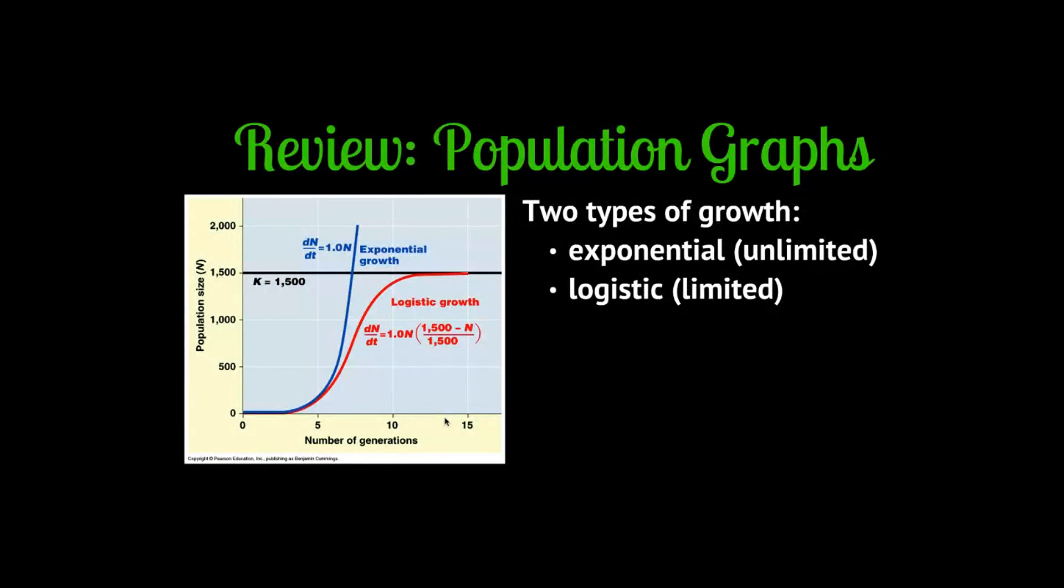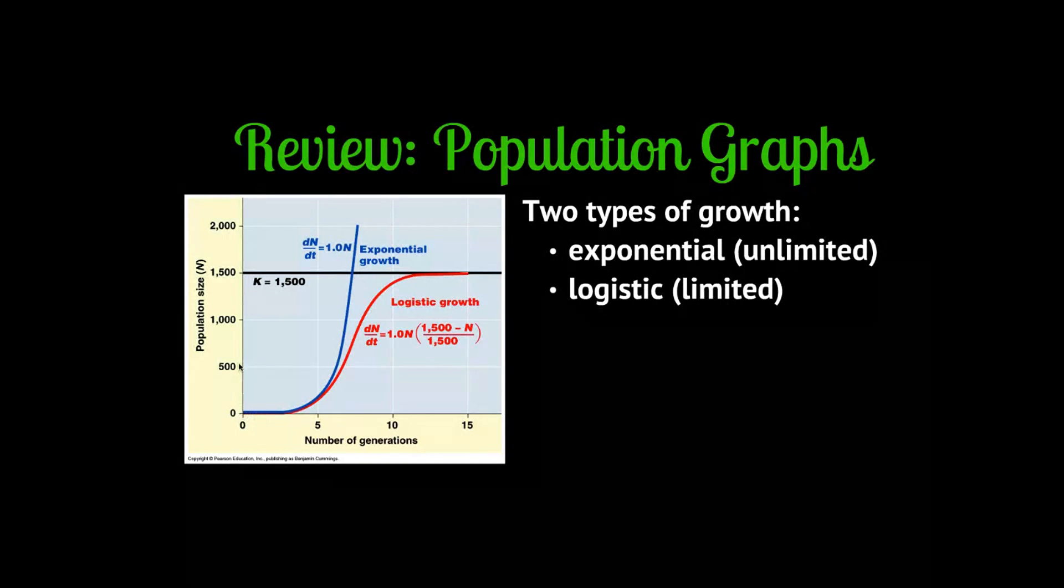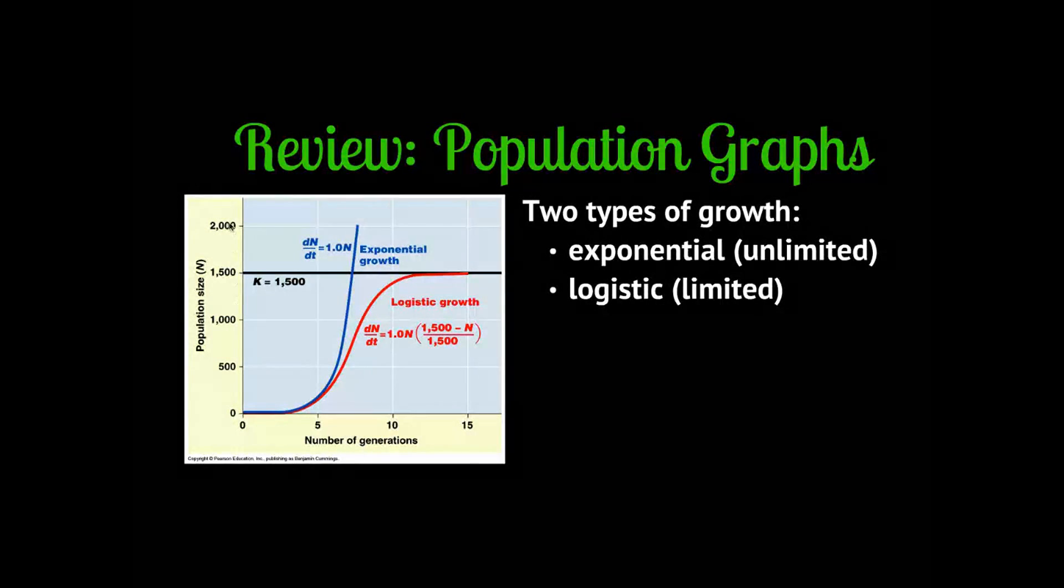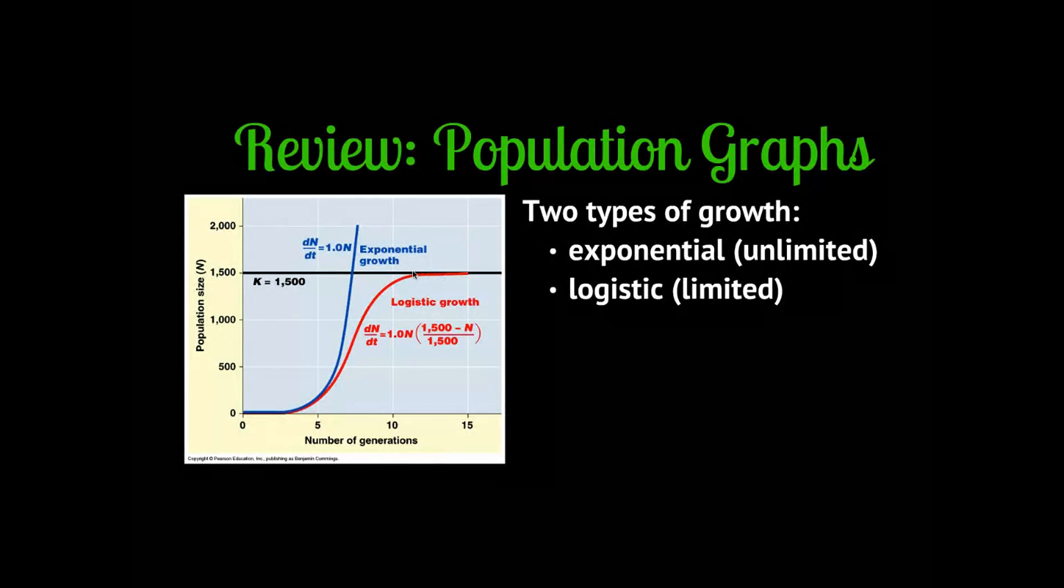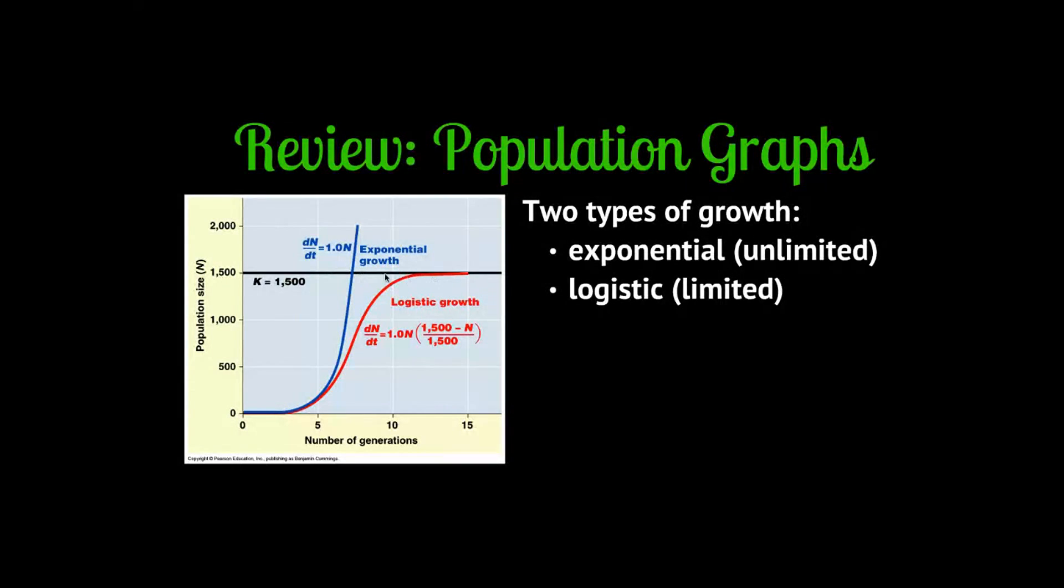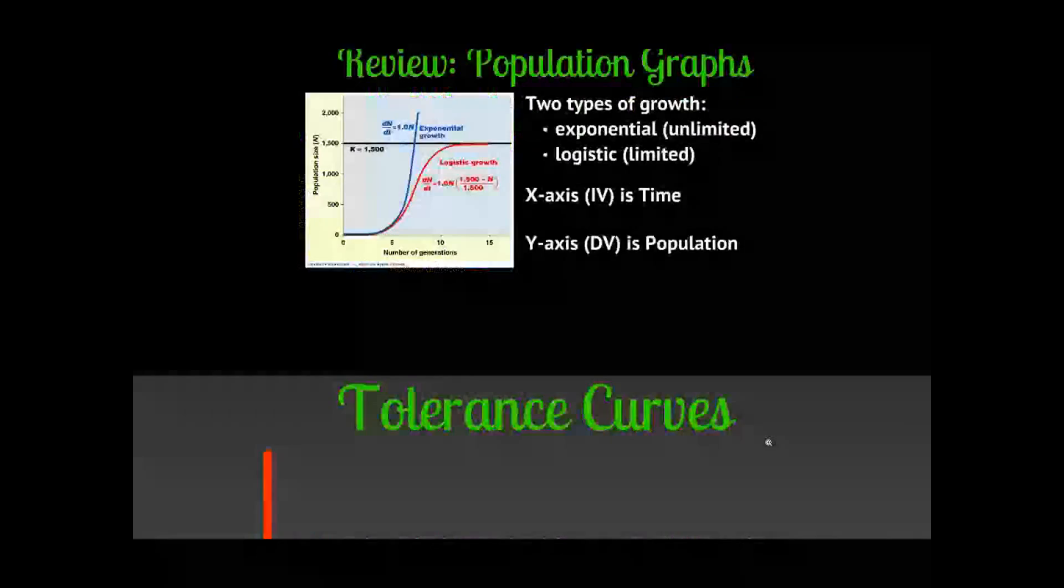In this case they did number of generations, but time. And then over here we had population size going up. So as time moved forward, we saw our population change and grow very rapidly and then slow down as it reached its carrying capacity. So the x-axis is time and the y-axis is population.